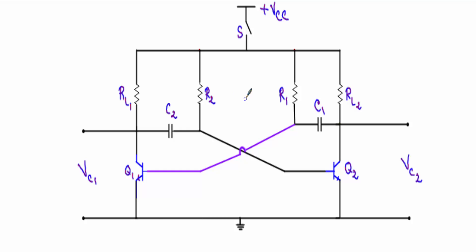This is the circuit diagram of our astable multivibrator. We are using two identical transistors Q1 and Q2, although they have different doping profiles, which I will show later. Transistor Q1 has collector load RL1 and transistor Q2 has load resistor RL2. The collector of Q2 is connected to the base of Q1 through capacitor C1, and the collector of Q1 is connected to the base of Q2 through capacitor C2. This structure is symmetrical, so an astable multivibrator consists of two identical common emitter configurations.